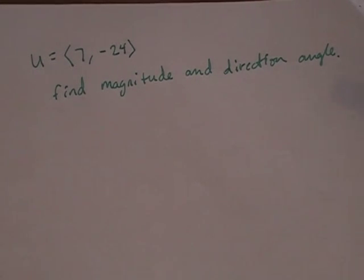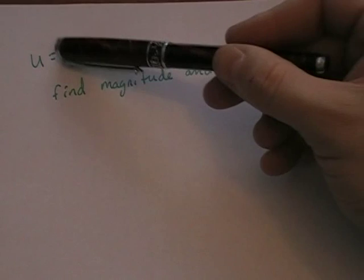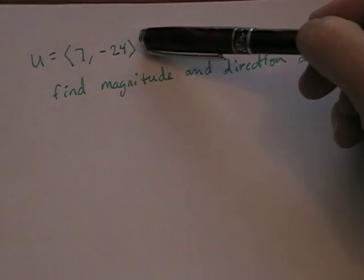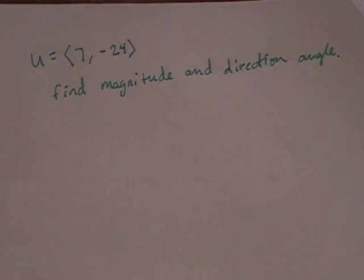So first of all, when you see a vector and you've got these, I call them pointy brackets, these little pointy brackets, that tells you it's a vector. And specifically, it tells you that you've been given this vector in component form.